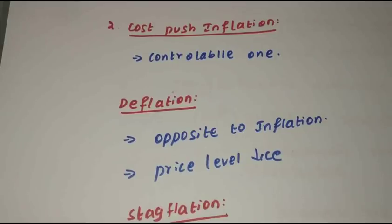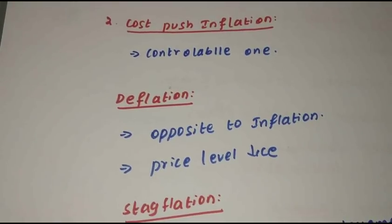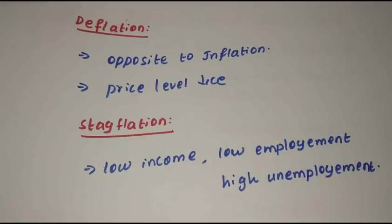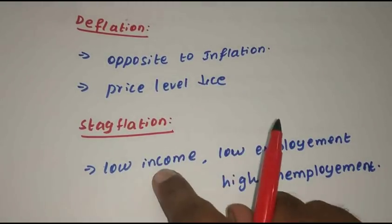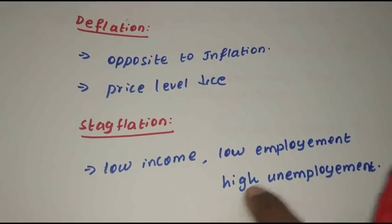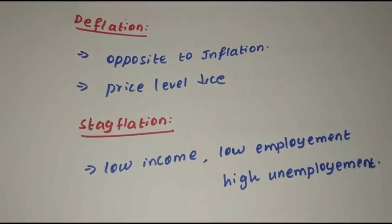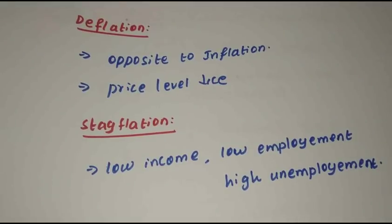Deflation is the opposite of inflation — price levels decrease. Stagflation combines stagnant economy with low income, low employment, and high unemployment alongside inflation — high unemployment with high prices. That is stagflation.